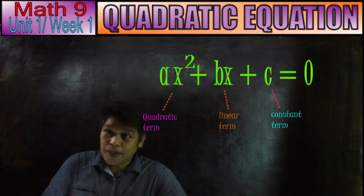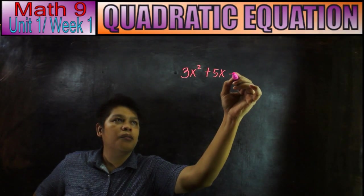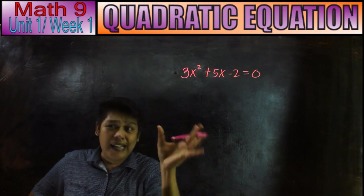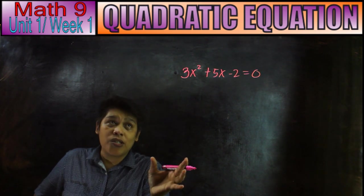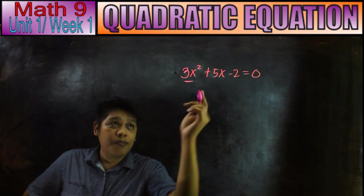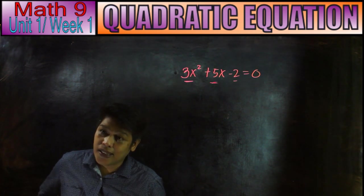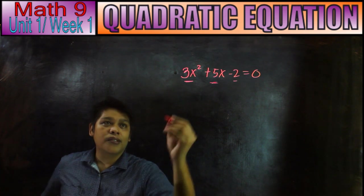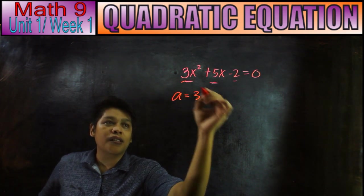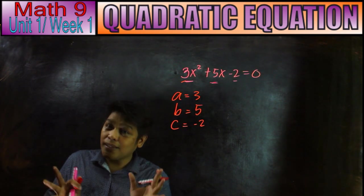For example, we have 3x squared plus 5x minus 2 equals 0. This is the standard form of quadratic equation. So ito yung quadratic term, linear term, and constant term. Let's find A, B, and C. Our A is 3, B equals 5, and C equals negative 2.